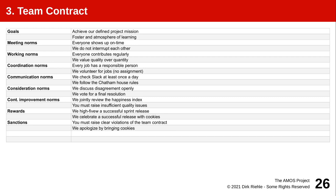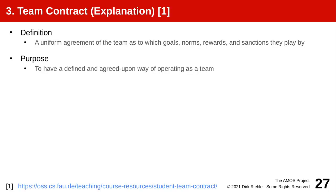The third tab is the so-called team contract. This is the output of a discussion the team needs to have about how you want to work together — covering goals, norms, rewards, and sanctions that you impose on each other. Why are you doing this: just to have fun or to get a good grade? You want to sit down and discuss what happens if someone's always late for a meeting. We provide a link at the bottom of the page with examples and a more detailed explanation of what we expect as part of a team contract — please take this discussion seriously, as it is a little bit like your operating manual as a team.